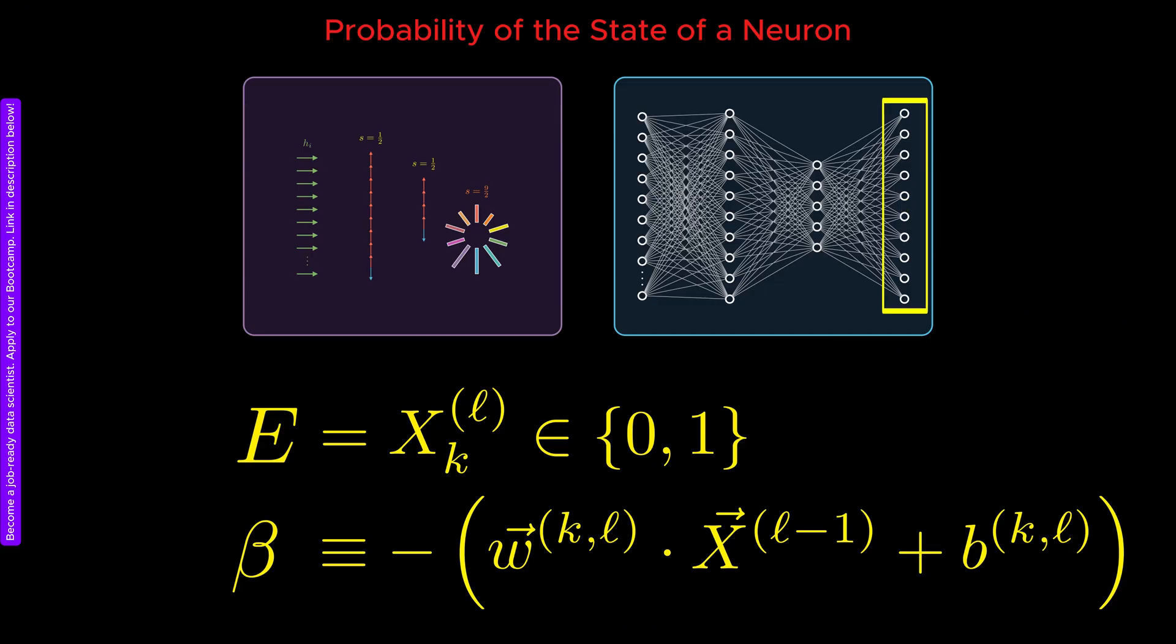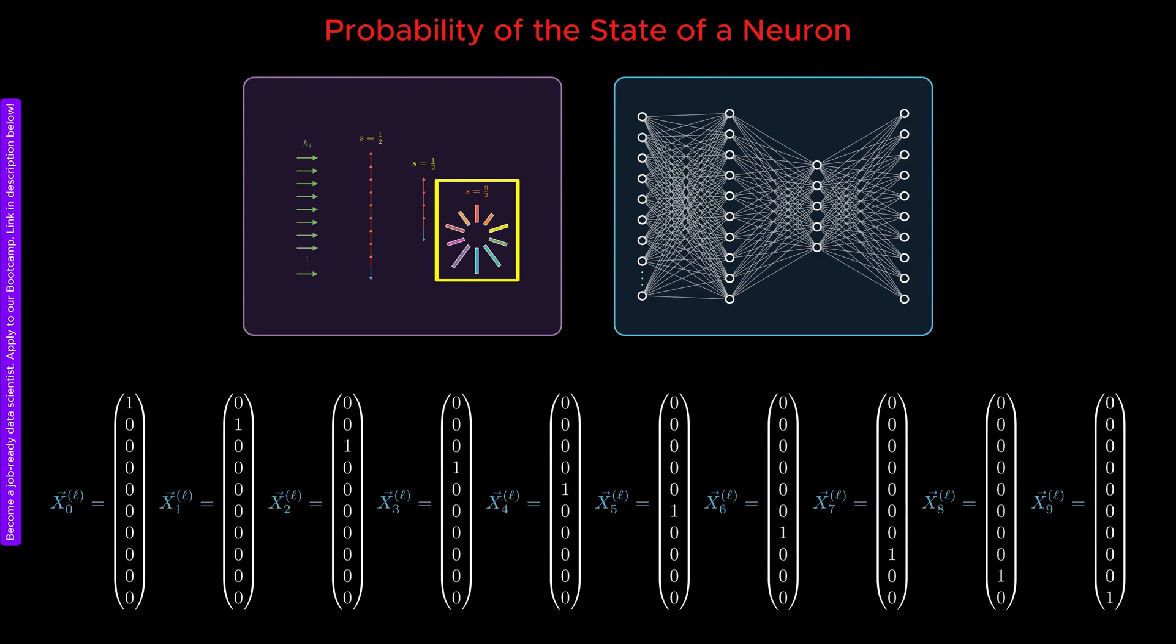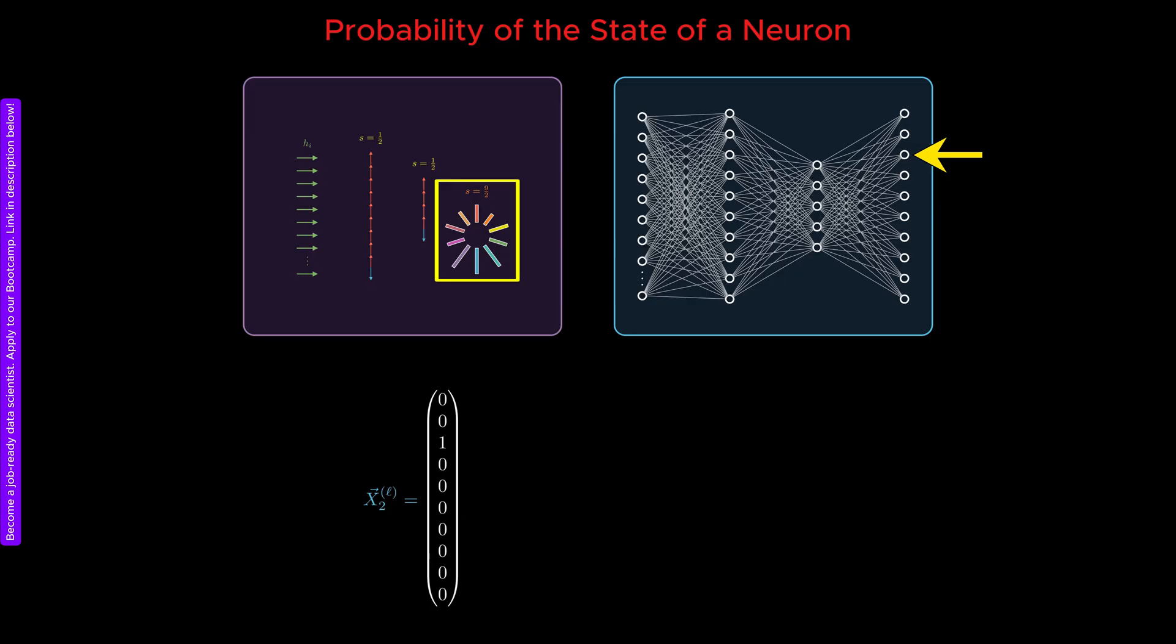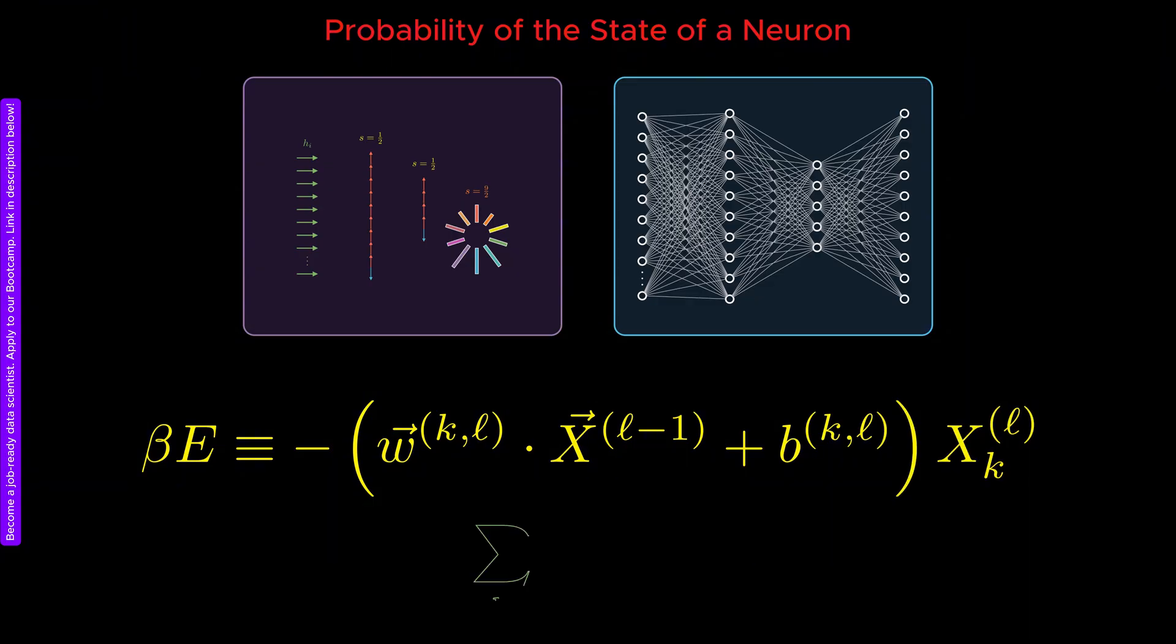For the output layer, the entire layer is equivalent to a particle with spin 9 halves, with 10 possible energy states from 0 to 9. These states are represented by 10 dimensional vectors, whose components are all 0 except for the one associated with the corresponding class. For example, the third class is represented by a 10 dimensional vector whose third component is 1 and all other components are 0. Therefore, for the output layer, the effective free energy has the following interpretation, under the condition that all x sub k in layer L are 0, except for the class of interest which is 1.